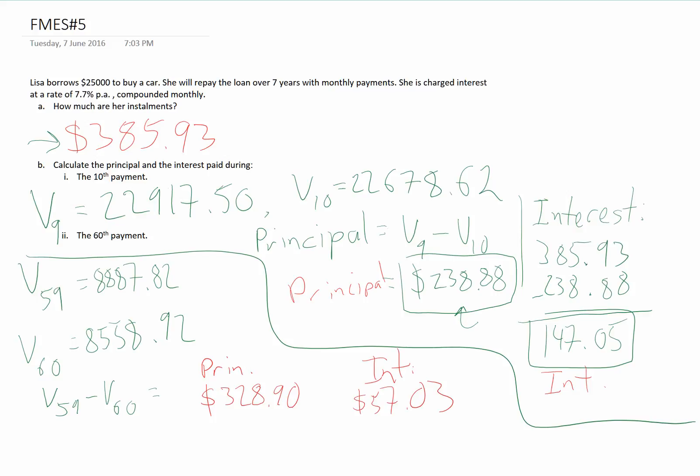As we can see, as she gets further along in her loan, more of her money is going towards paying off the principal and less towards paying off the interest, which is what we would expect.